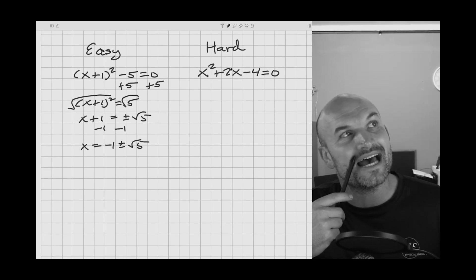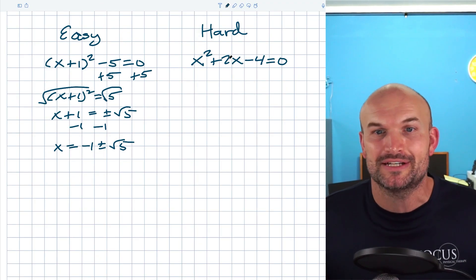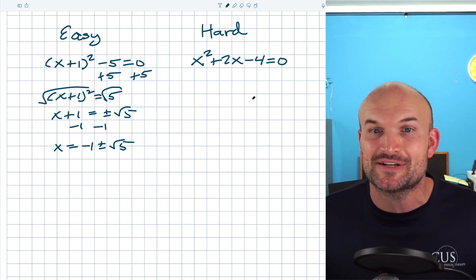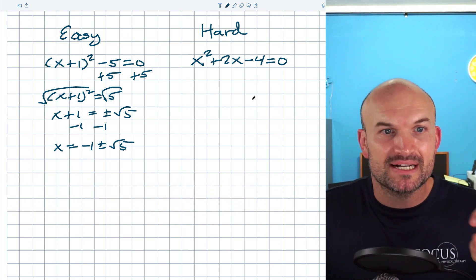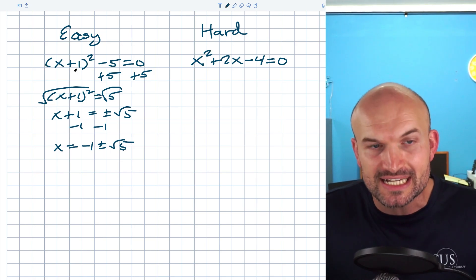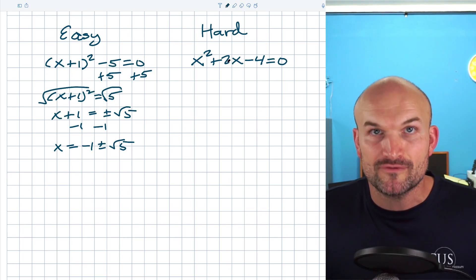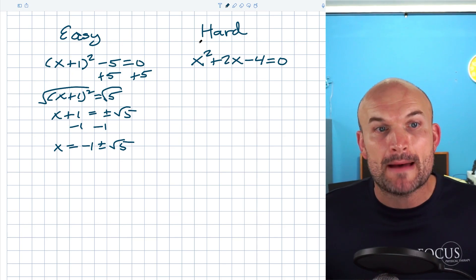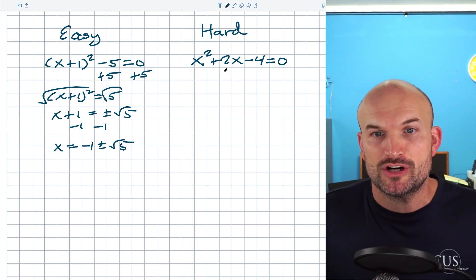It would be cool if I could use the same operation I did for the easy problem on this hard problem — and yes, it is possible. That is the process we've been working on through this series of videos, which is called completing the square. The reason these two problems are different is this one is written as a binomial square and this one is in expanded form.